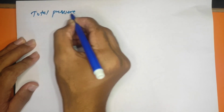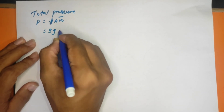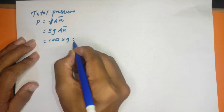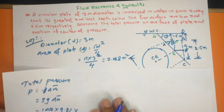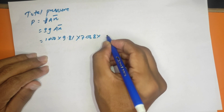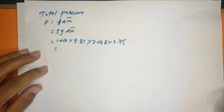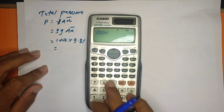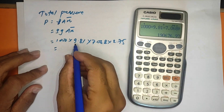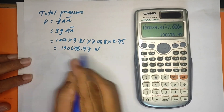Total pressure F = ρgAx̄. With ρg = 9.81 kN/m³, A = 7.068 m², and x̄ = 2.75 m: F = 9.81 × 7.068 × 2.75 = 190,676 N. This is the total pressure.